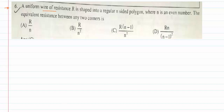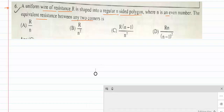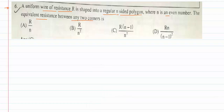There is a uniform wire whose resistance is equal to r. It is shaped into a polygon having n sides — of course n is an even number. What is the equivalent resistance of that polygon between any two corners? That is the question. Let's try to solve this.